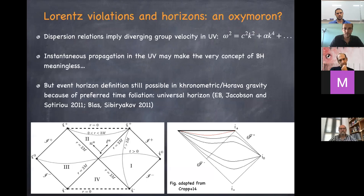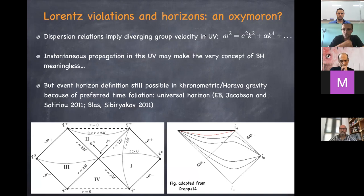It would seem that Lorentz violations and horizons are an oxymoron: the dispersion relation implies divergent group velocity in the UV, giving instantaneous propagation that would render the concept of a black hole meaningless. Nevertheless — and this is work I did about ten years ago — it turns out that because of the existence of a preferred foliation, you can still define a well-defined meaning for black hole horizons.